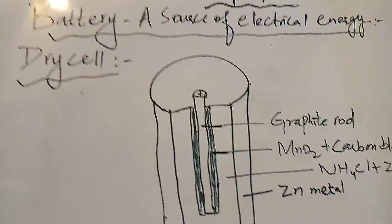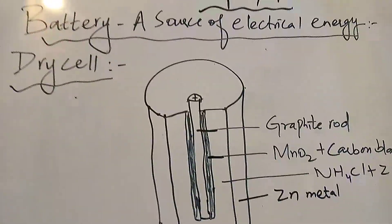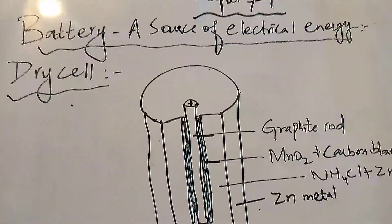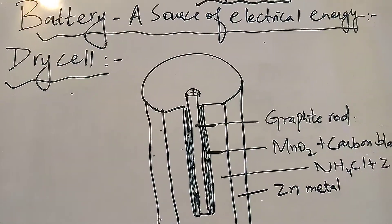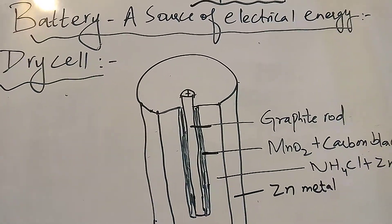When we connect the battery within any circuit, the anode oxidizes by releasing electrons. However, there is a reduction in cathode.